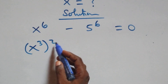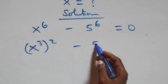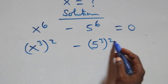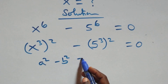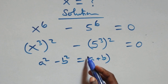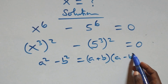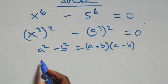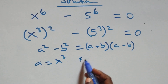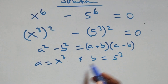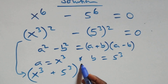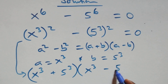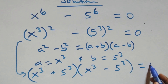We can write this as x raised to power 3, all raised to power 2, minus 5 raised to power 3, all raised to power 2, equals to 0. This follows the identity a squared minus b squared equals a plus b times a minus b, where a is x raised to power 3 and b is 5 raised to power 3. So we have x³ plus 5³ times x³ minus 5³ equals to 0.